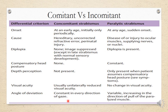Regarding angle of deviation, concomitant squint has the same angle in all directions of gaze — you will not find any change in angle in any particular gaze. In paralytic squint, the angle is variable and increases in the direction of action of the paralyzed muscle. For example, in right lateral rectus palsy, when the patient looks to the right the deviation increases, but when looking to the left it decreases. In concomitant squint, whether you ask the patient to look right or left, the angle of deviation stays the same.